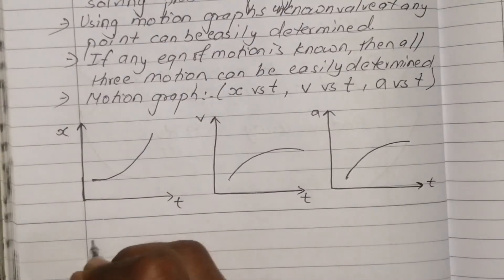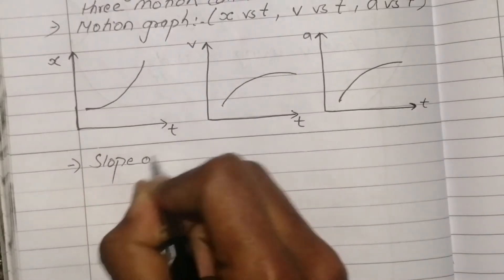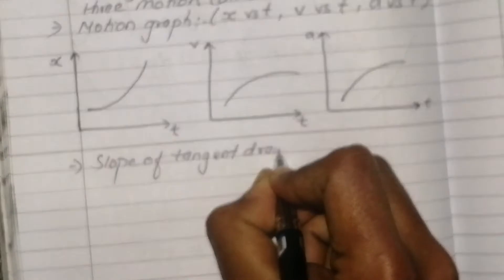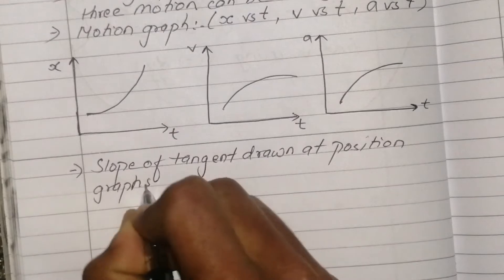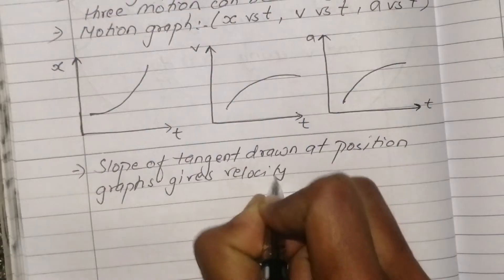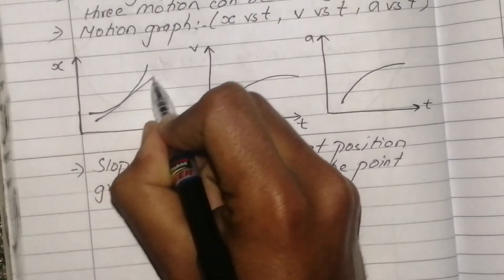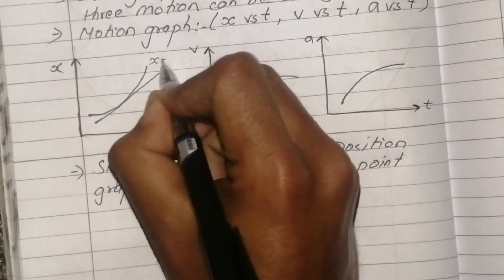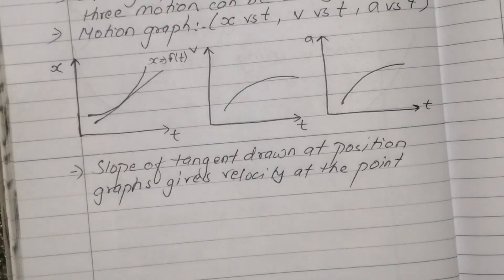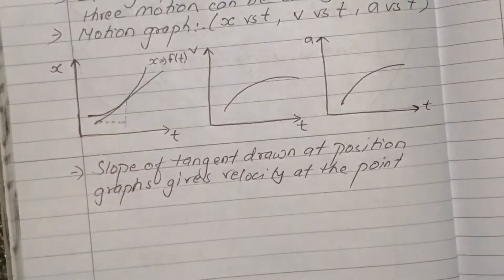Now let's look at this point: the slope of the tangent drawn at the position graph — the position versus time graph — gives the velocity at that point. The tangent drawn at the position graph gives the velocity as a function of time.